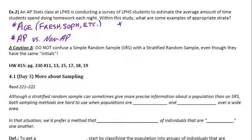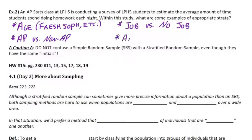Another variable to consider, as far as free time goes, is whether someone has a job versus someone who doesn't. Those are two different strata for grouping the LPHS population around homework time. And one more: how about athletes versus non-athletes, as far as homework time goes?